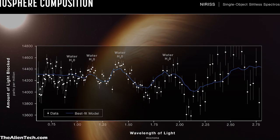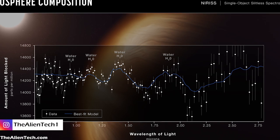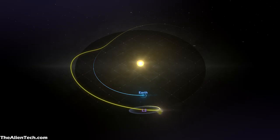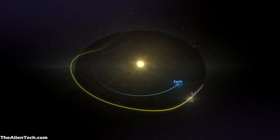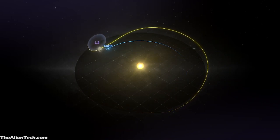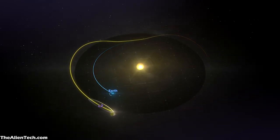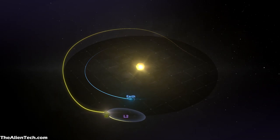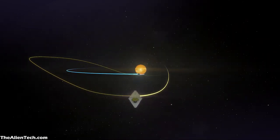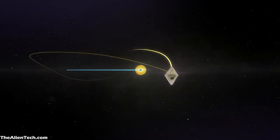Webb observed this planet for about 6.5 hours. These continuous 6-plus hours of exposure were possible only because Webb is at Lagrange Point 2, also known as L2. This is the biggest advantage Webb has over Hubble. As Hubble is rotating around the Earth, its view gets blocked by the Earth after some time, so continuous exposure to any object with Hubble is not possible.